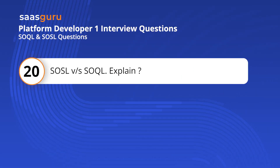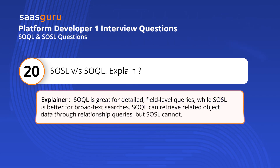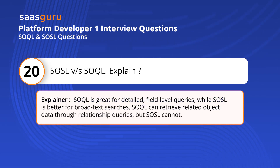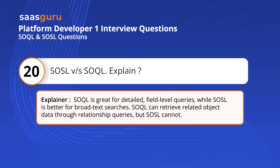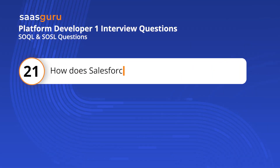Question 20: SOSL vs. SOQL — explain. SOQL is great for detailed, field-level queries, while SOSL is better for broad text searches. SOQL can retrieve related object data through relationship queries, but SOSL cannot.